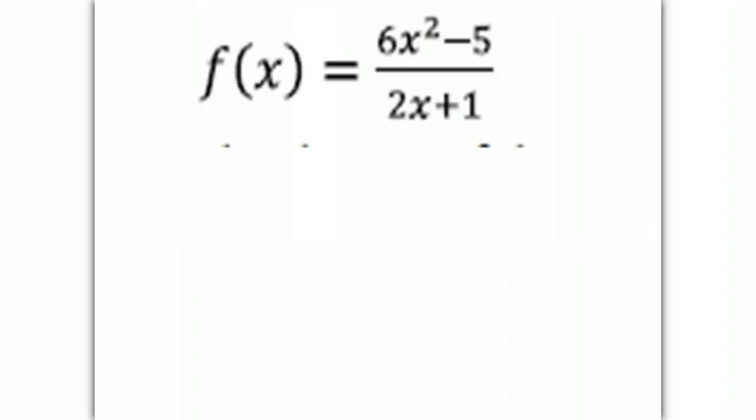Here we have f(x) equals 6x squared minus 5 over 2x plus 1. Now, the degree of our first polynomial is 2. The degree of our second polynomial is 1. So therefore, the numerator is 1 larger than the denominator, so we will have no horizontal asymptotes.